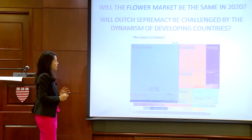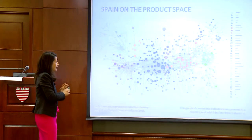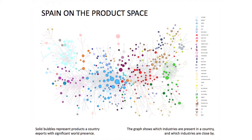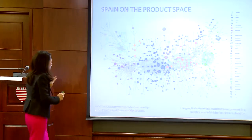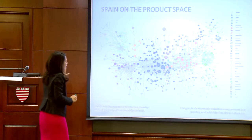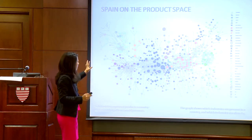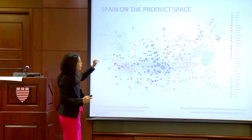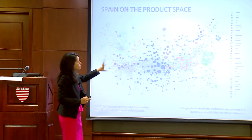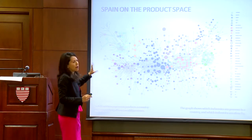This is one set of applications. The other ones have to do with the product space and predicting growth and diversification. I'll give a quick explanation for those who haven't seen this picture before.